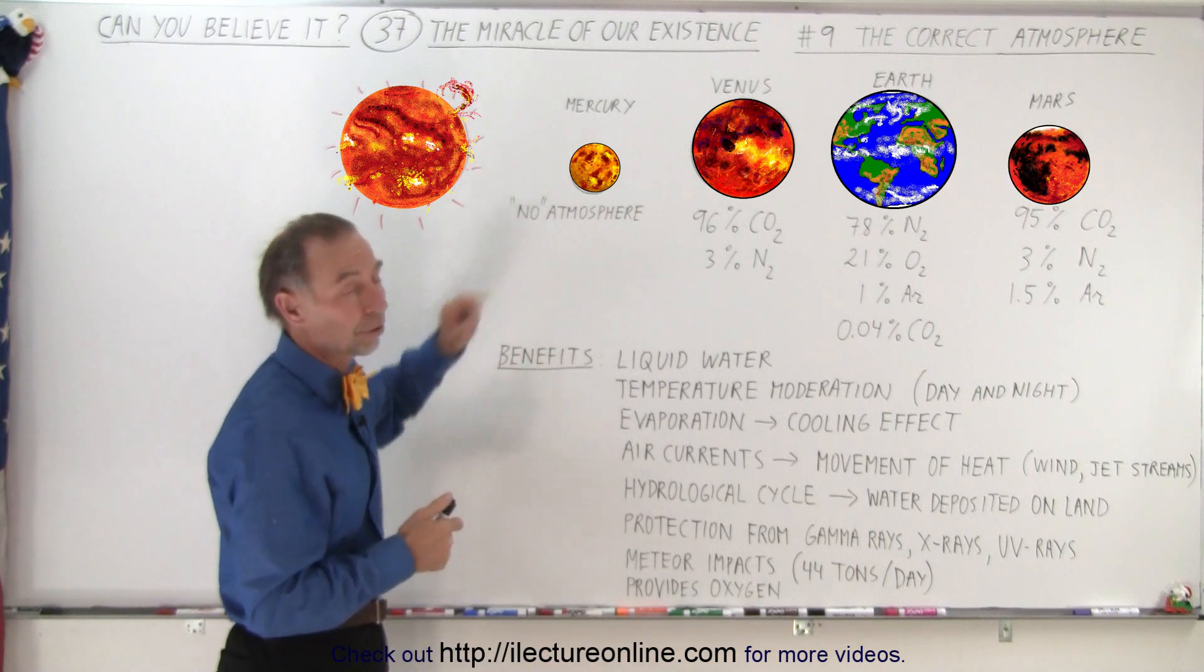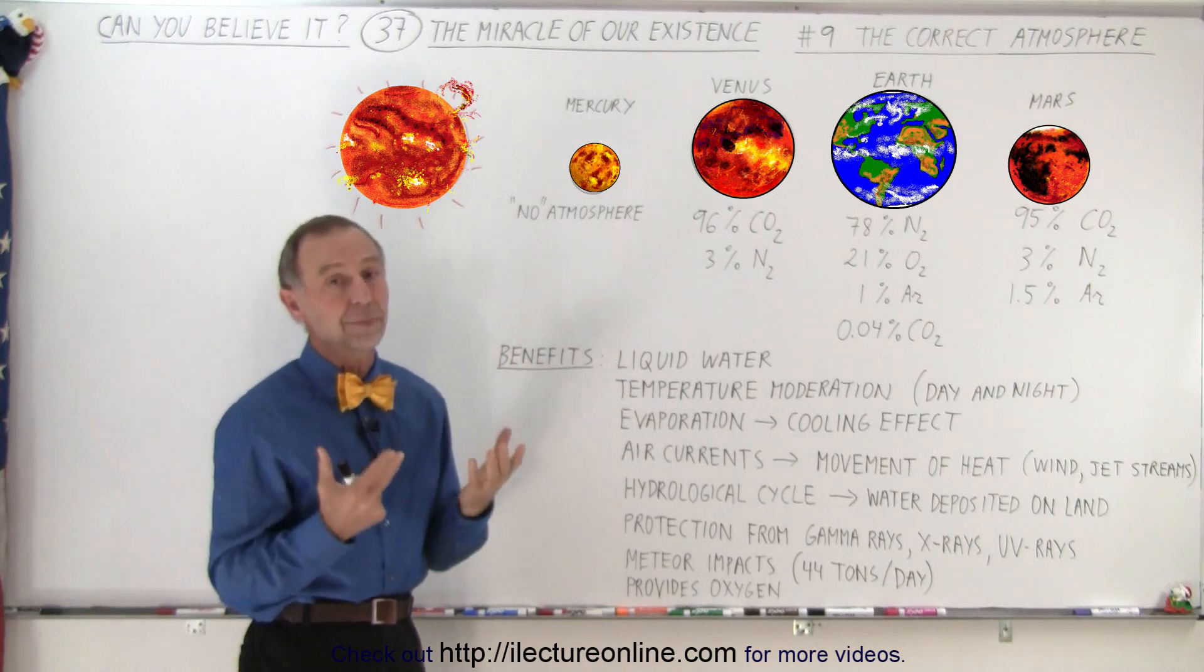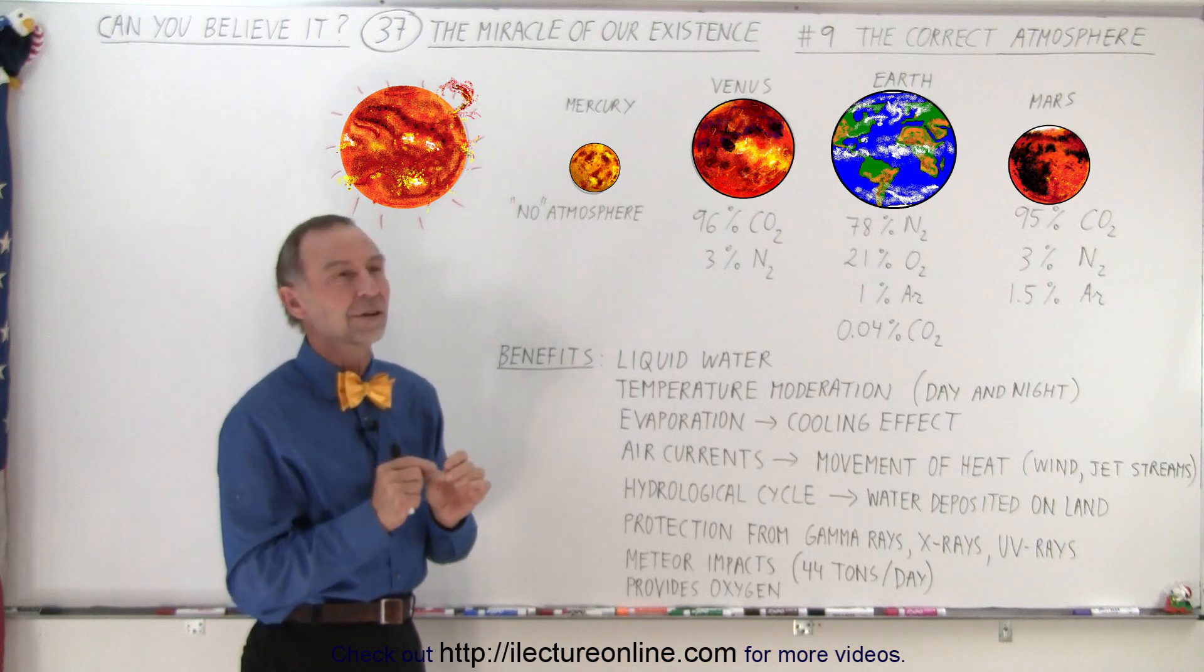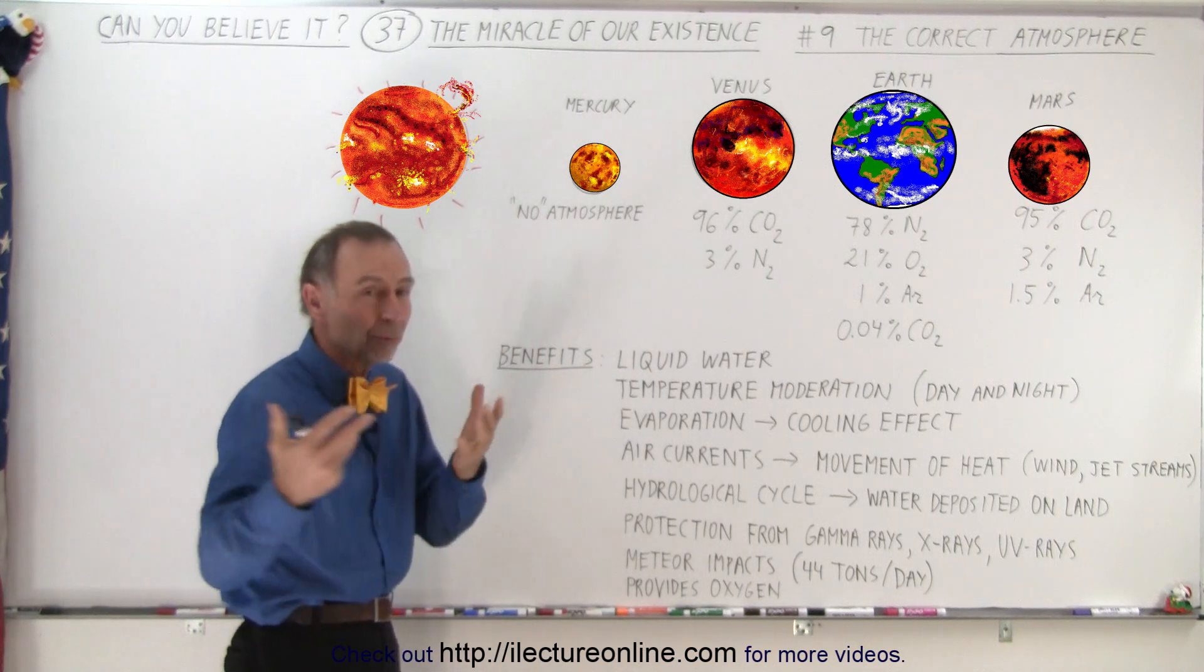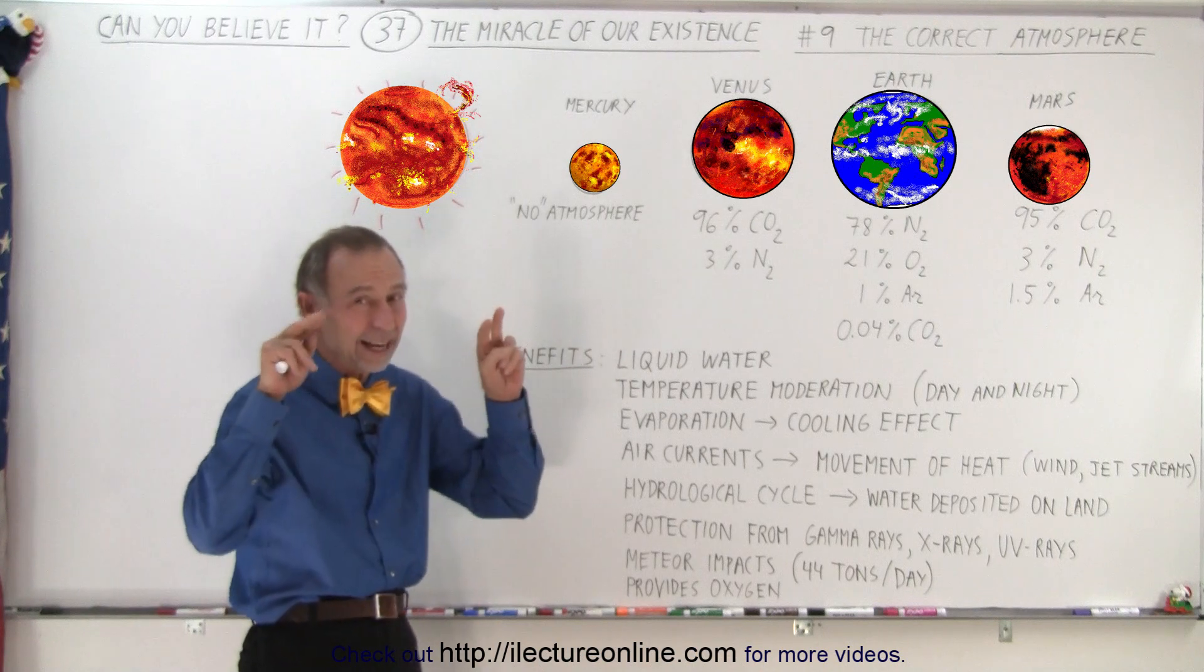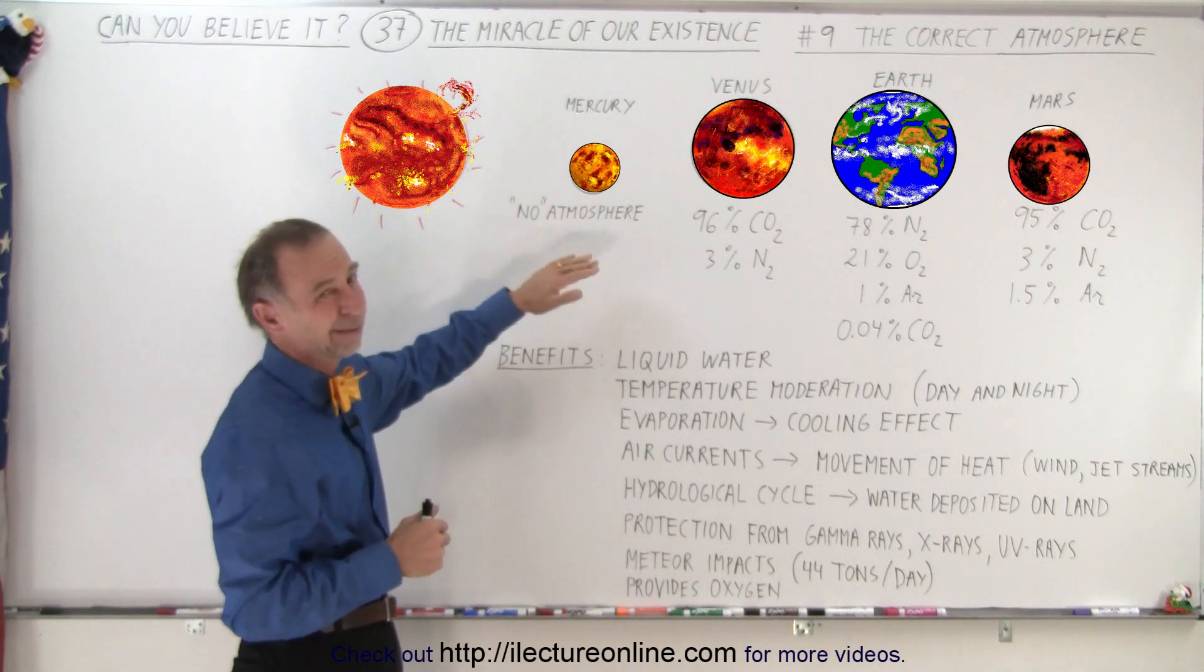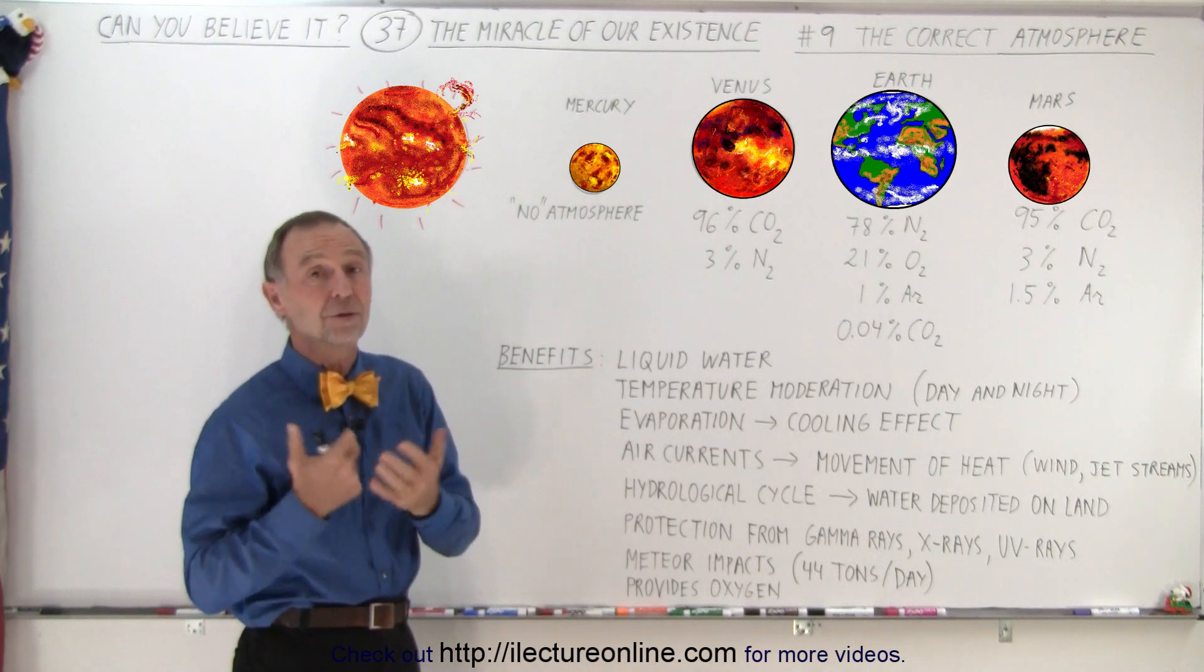Mercury has virtually no atmosphere. Somebody may say it does have a little bit of atmosphere because being nearby the Sun, it receives particles from the Sun that temporarily stay around the planet just long enough to say it has a very tenuous atmosphere. But it's just correct to say, ignore it. There's no atmosphere there. There's virtually nothing to breathe.